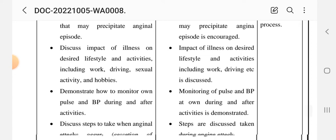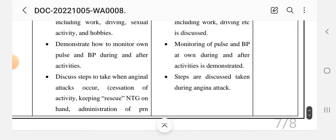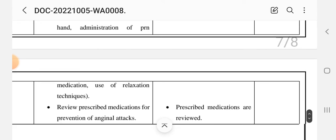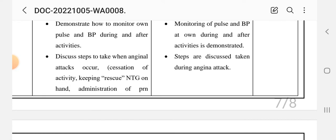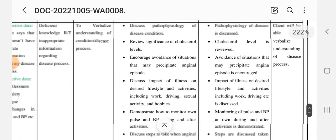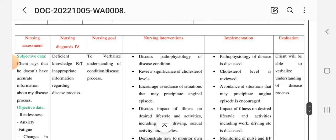Discuss the impact of illness on desired lifestyle and activities including work, driving, and sexual activity. Demonstrate how to monitor pulse and blood pressure during and after activities. Discuss steps to take when an anginal attack occurs — cessation of activity, keeping nitroglycerin on hand, administration of PRN medications when required, and use of relaxation techniques. Review prescribed medications for prevention of anginal attacks.